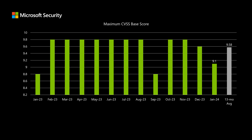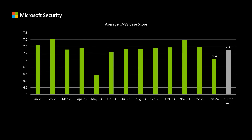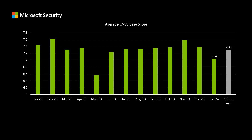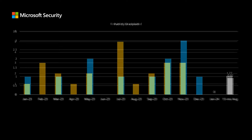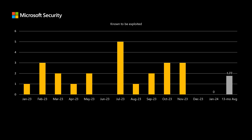This month, the highest scored vulnerability comes in at 9.1, and we've been averaging almost 9.6 for that high score over the past year. The average CVSS score across the entire release comes in at 7.04, which is quite a bit lower than our average of 7.30 over the past 13 months. There are no publicly disclosed vulnerabilities in today's set — we've been averaging just under one. And finally, there are no vulnerabilities known to be exploited out in the wild, two months in a row at zero, and we've been averaging around 1.8 over the past year.